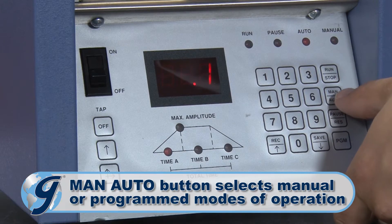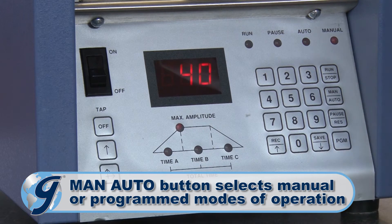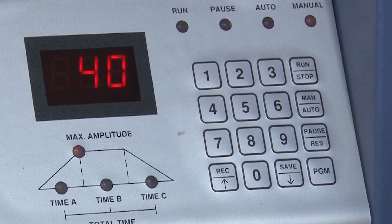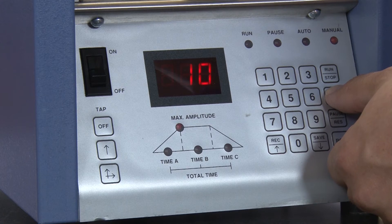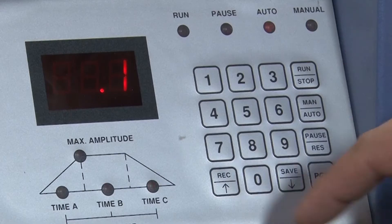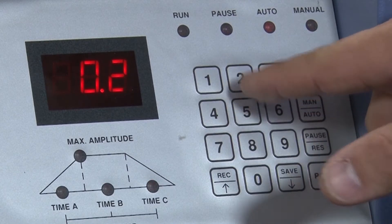The Manual Auto button selects either Manual or Program modes of operation. The Manual mode is generally used when determining test settings for a particular sample. The Auto mode is used when inputting test parameters or selecting previous test parameters from the unit's memory.